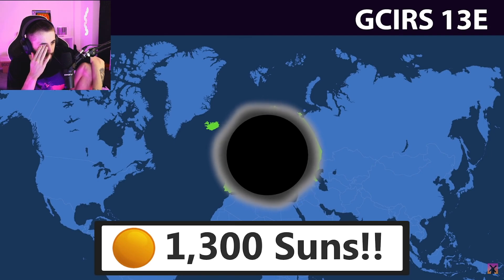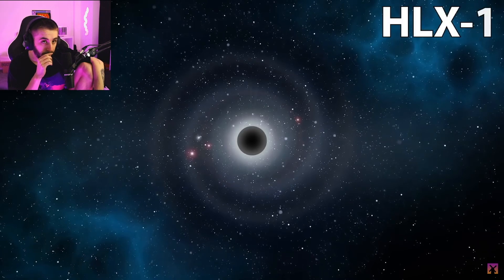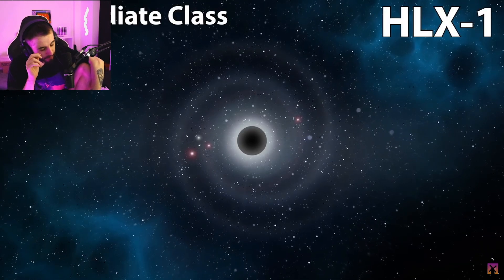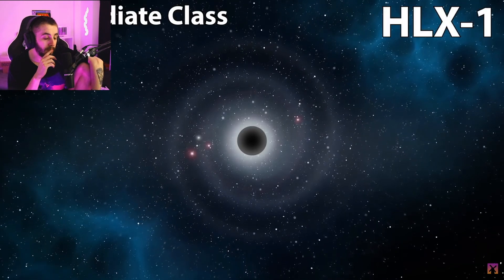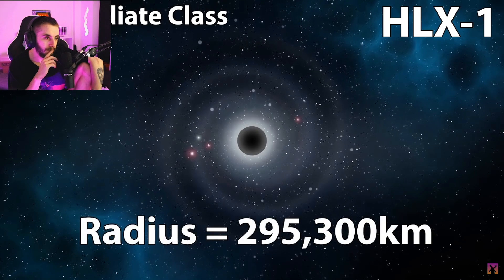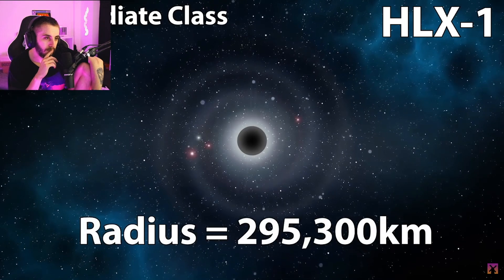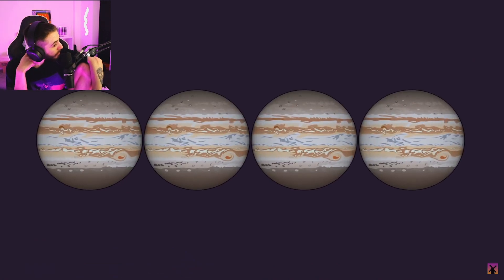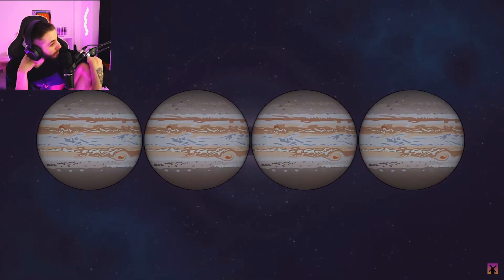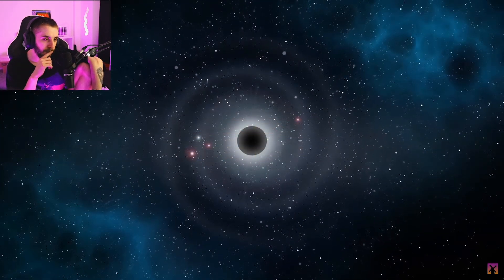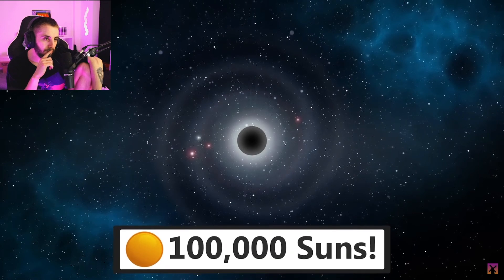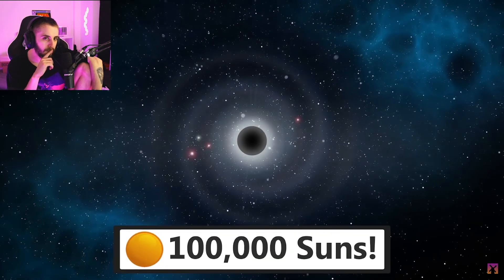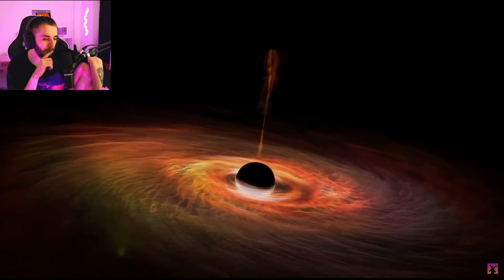Even that is insanely tiny compared to HLX-1, designated as an intermediate-sized black hole. It has a radius of about 295,000 to 300,000 kilometers — about as wide as four Jupiters placed side by side — but it contains the mind-boggling mass of 100,000 suns inside of it.